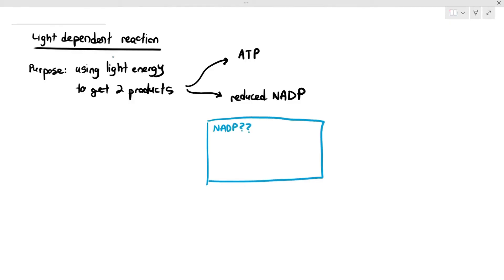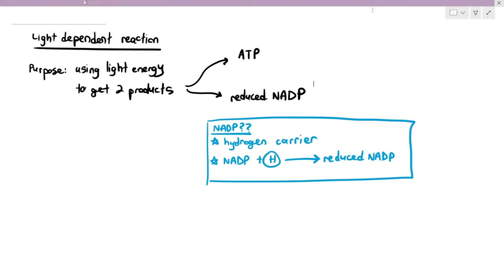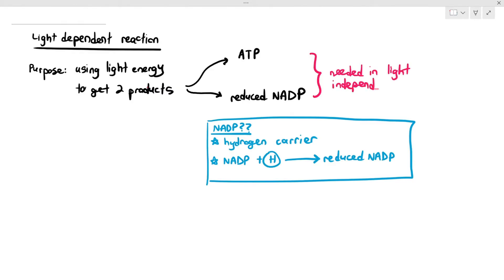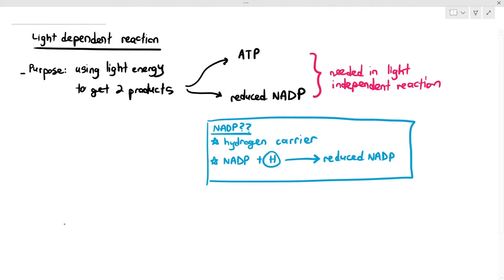NADP is a hydrogen carrier, and when NADP receives hydrogen, it becomes reduced NADP. A very important thing to know here is that ATP and reduced NADP are then later needed in the light-independent reaction. So the purpose of light-dependent reaction right now is to get these two products first.